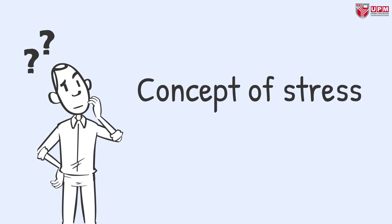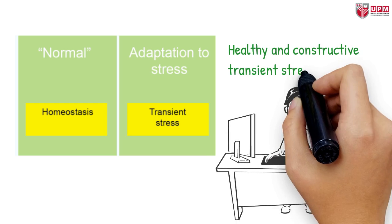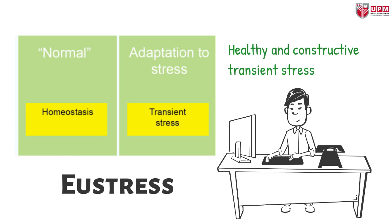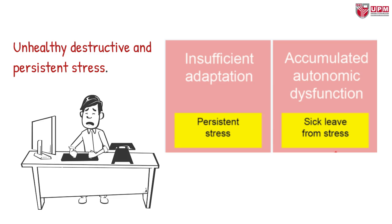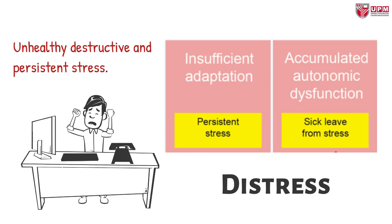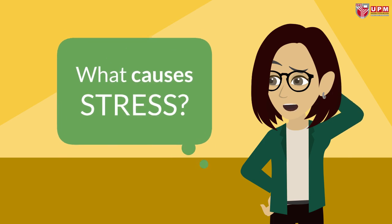Let's see the concept of stress. Stress involves a stressor and a stress response. There are four stages of stress. The green area marks the healthy and constructive transient stress — the body mobilizes resources in an adaptive response to a perceived challenge or threat, also called eustress. The red area marks the unhealthy, destructive and persistent stress, where the adaptive response works inadequately and the body is in a condition with a persistently elevated level of stress, also called distress.